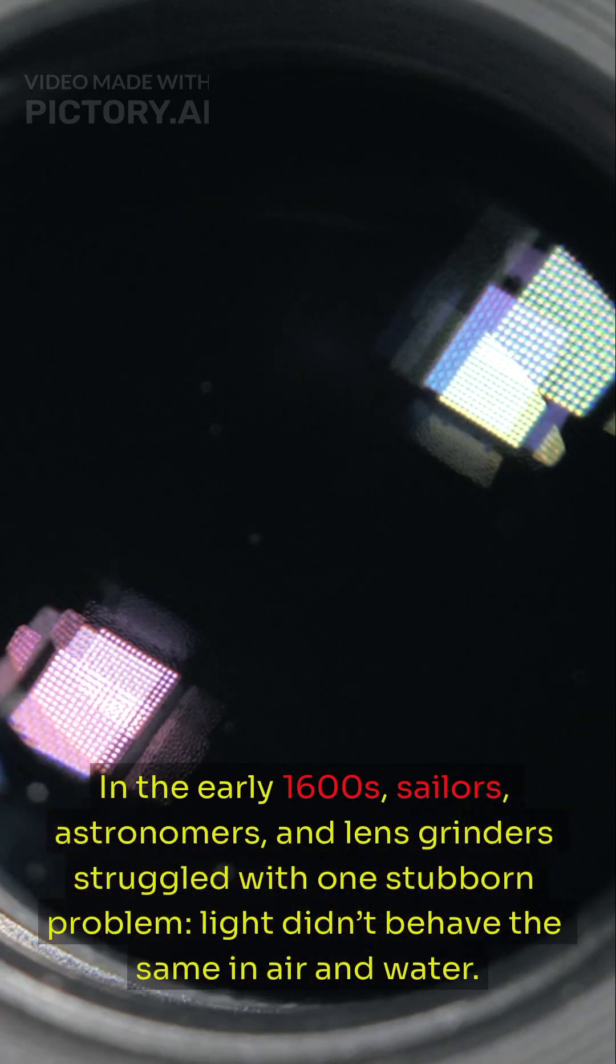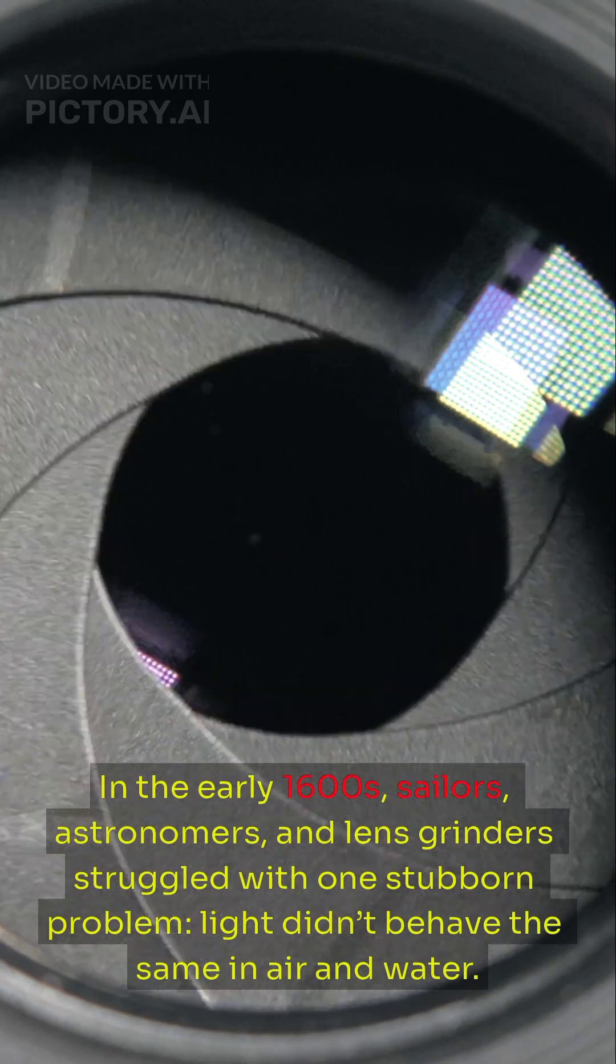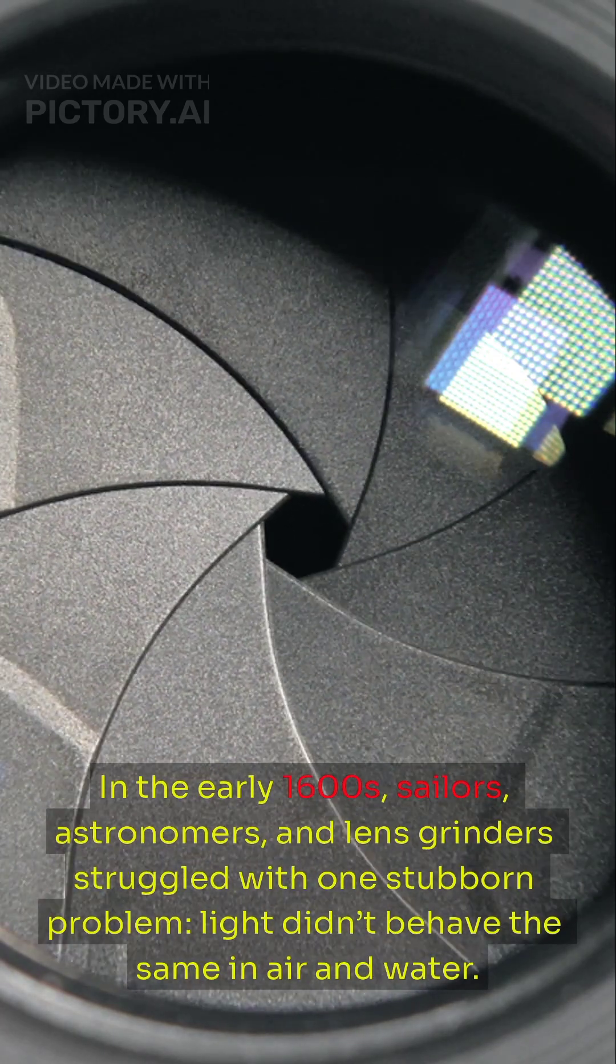In the early 1600s, sailors, astronomers, and lens grinders struggled with one stubborn problem: light didn't behave the same in air and water.